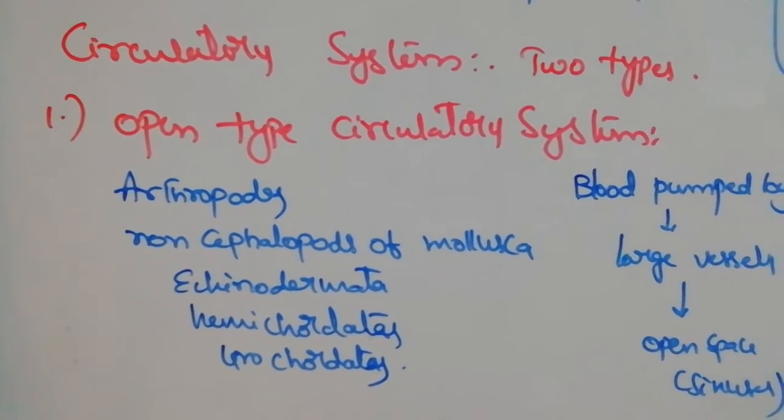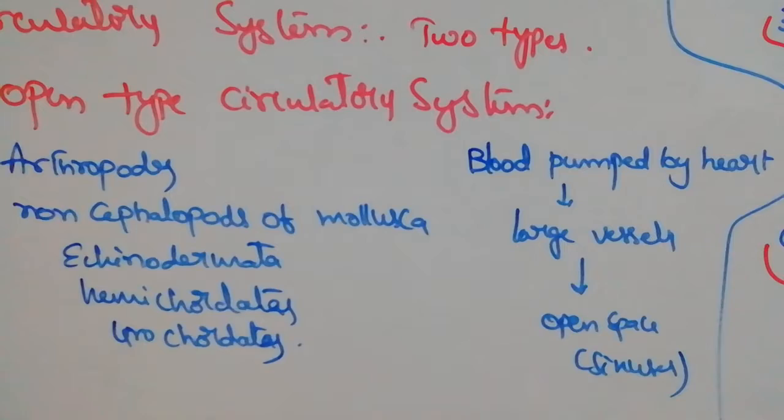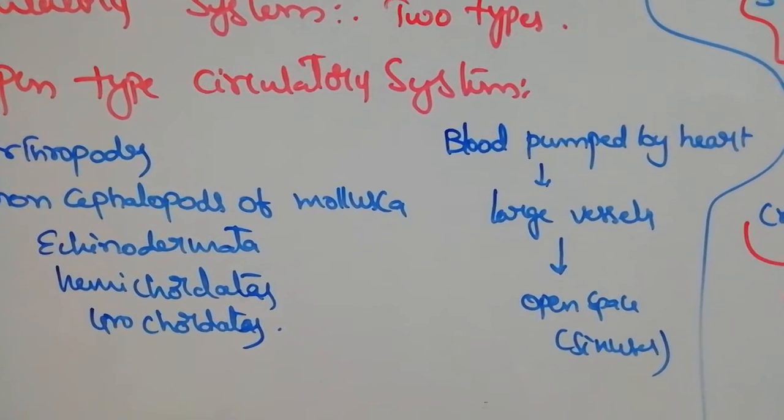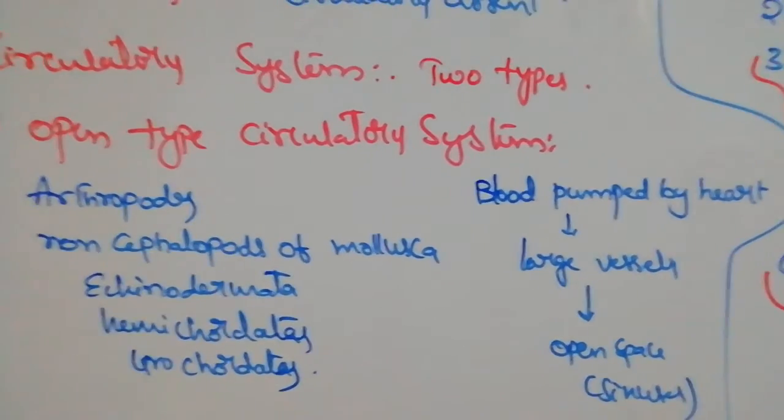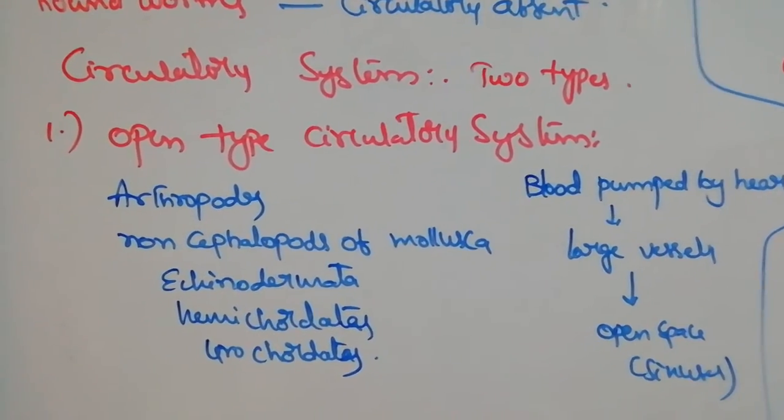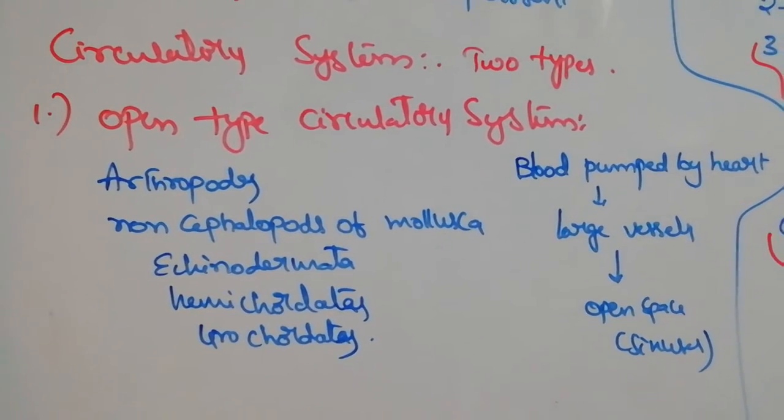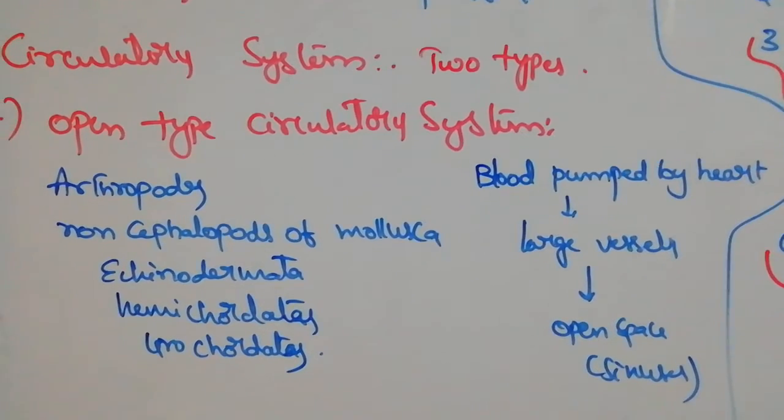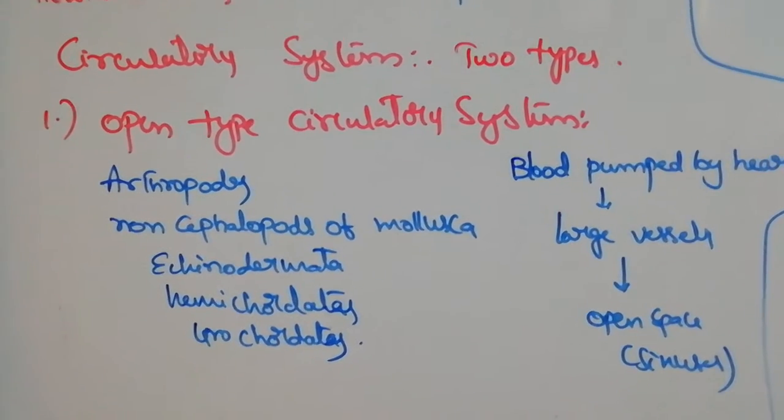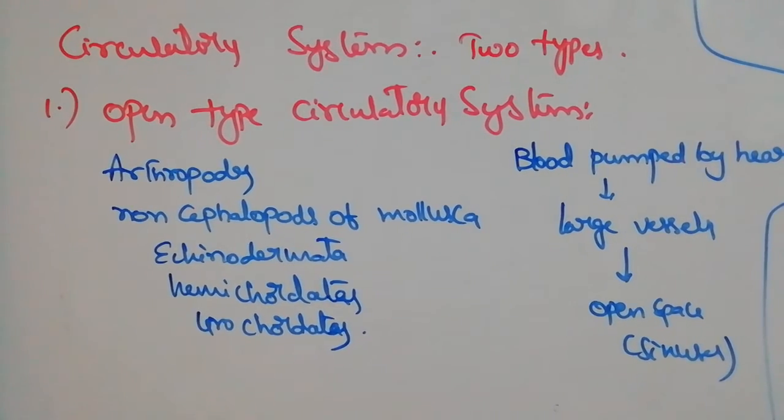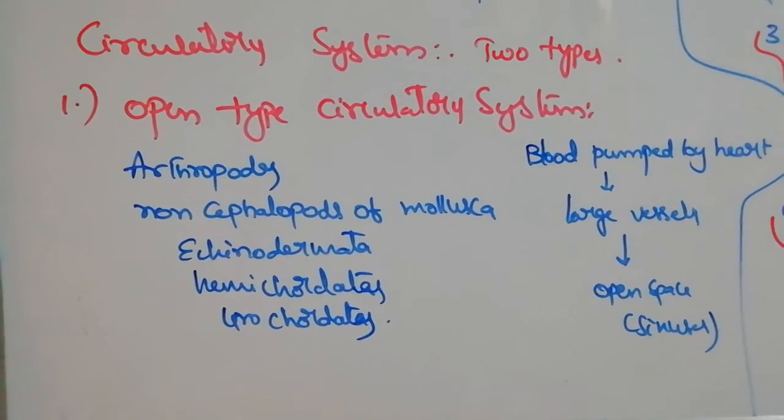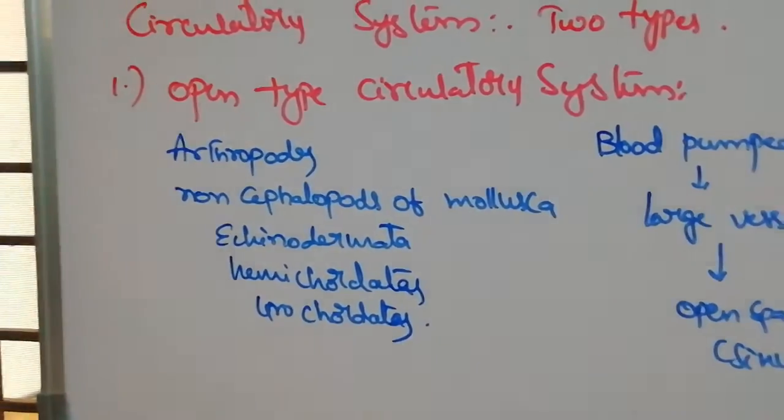In open type of circulatory system, blood is pumped by the heart which is entering into the large blood vessels and open space called the sinus. From that sinus through the veins it re-enters the heart. The pumped fluid is called hemolymph. Lymph is formed from extracellular fluid and blood mixed, forming hemolymph which completely fills the coelom. So the organs present in the coelom are bathed in that fluid, floating on it.